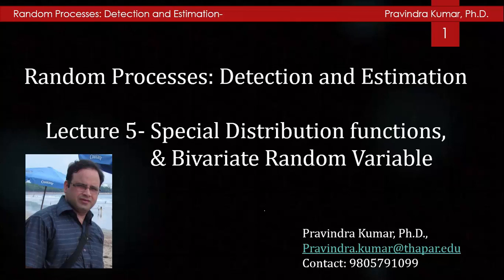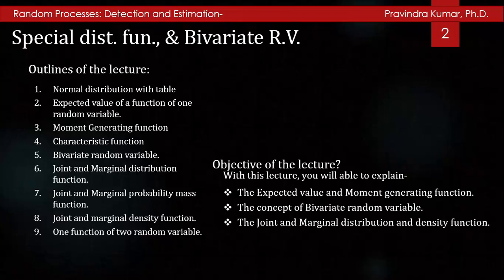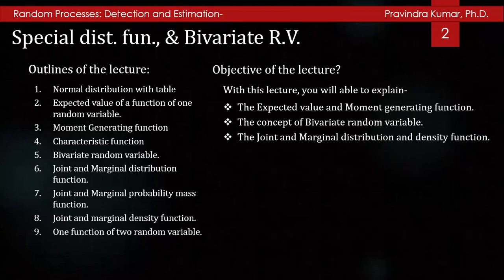In this lecture, we will discuss the Bivariate Random Variable and Normal Distribution with Table. The outline includes: Normal Distribution with Table, Expected Value of a Function of one random variable, Moment Generating Function, Characteristic Function, Bivariate Random Variable, Joint and Marginal Distribution Functions, Joint and Marginal Probability Mass Function, Joint and Marginal Density Function, and one function of two random variables. The objective is to explain expected value, moment generating function, and the concept of bivariate random variable, as well as joint and marginal distribution and density functions.